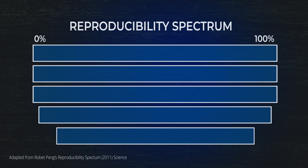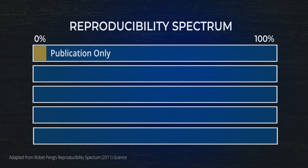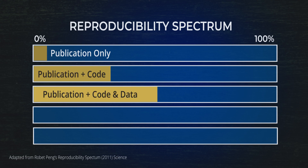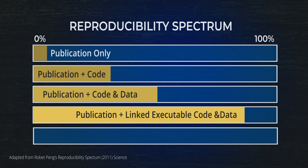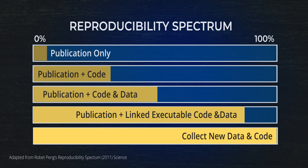Robert Pang suggested the idea that there is a spectrum of reproducibility and replicability. At the far end is the traditional model of publishing, where you simply release an article publication, which is not really reproducible. If I actually wanted to reproduce a colleague's findings, at a minimum I would need access to their data and code. Farther down the spectrum, I would need the code and data in a linked and executable computing environment. And then at the far end of the spectrum is full replication, where you collect new data and code to test the hypothesis.